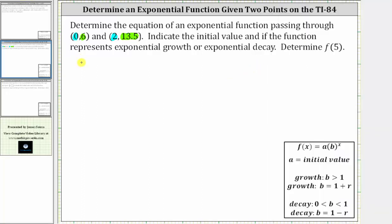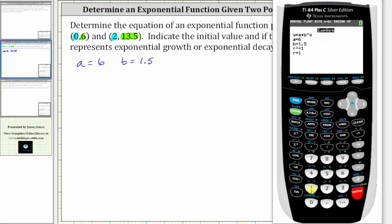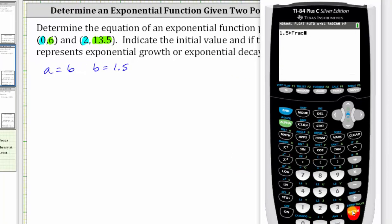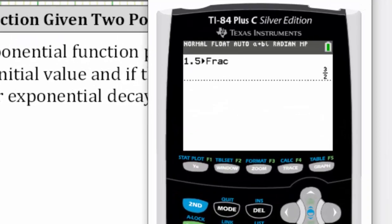So again, we have a equals 6 and b equals 1.5, and let's convert this to a fraction. If we go back to the calculator, if we enter 1.5, MATH, ENTER, ENTER, notice how it does convert 1.5 to 3/2.